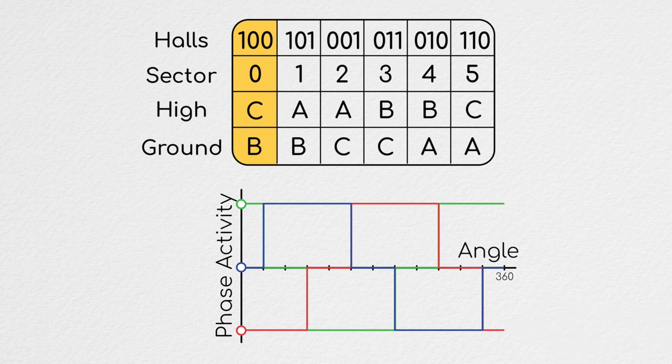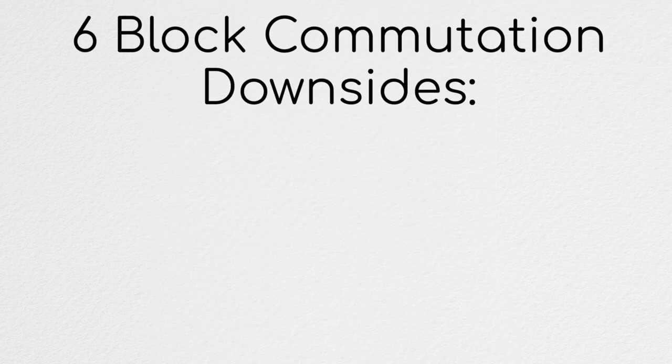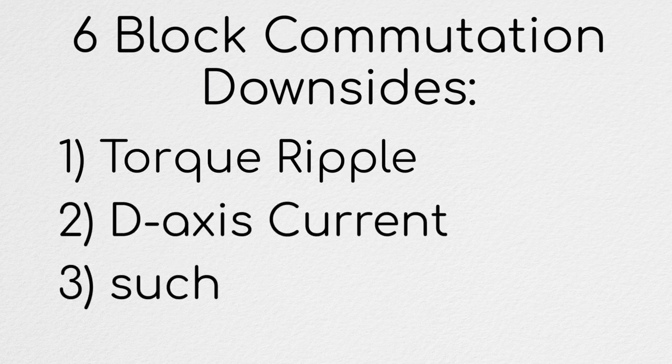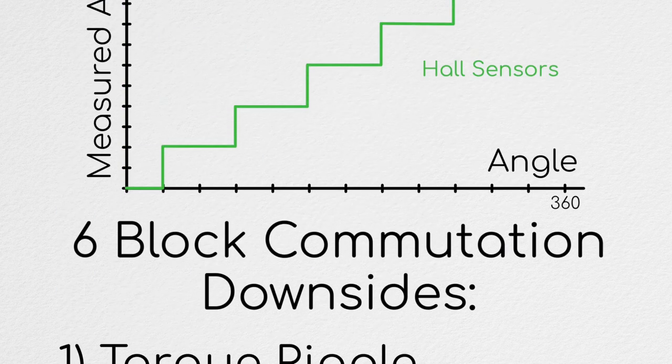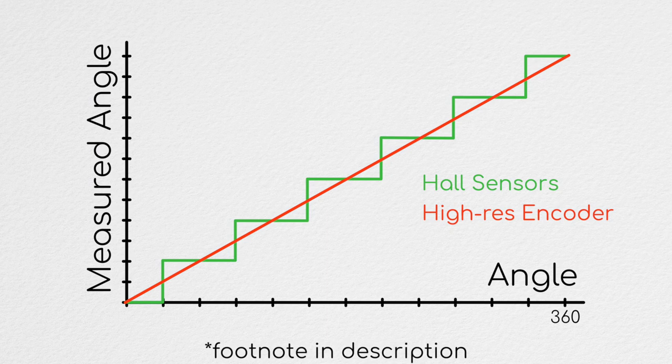Note that this commutation pattern is for positive torques. If we wanted to produce a negative torque, we simply flip this commutation scheme about the x-axis. For all the reasons we've talked about in the last couple episodes, torque ripple, unwanted d-axis current, and such, 6-block commutation leaves a lot to be desired. However, if you have a more resolute method of angular sensing, like an encoder for example, you can improve your method of commutation.